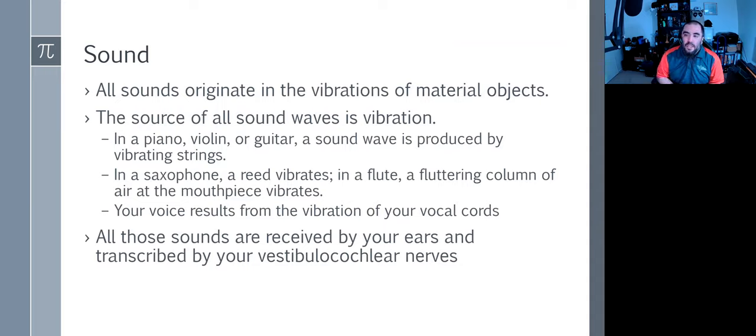All sounds originate in the vibration of material objects. The source of all sound waves is vibration. In a piano, violin, or guitar, sound waves are produced by vibrating strings. In saxophones, the reed vibrates. In a flute, a fluttering column of air at the mouthpiece vibrates. For me sitting here, my voice results from vibration of my vocal cords. I can change my voice by adjusting how those vocal cords react.